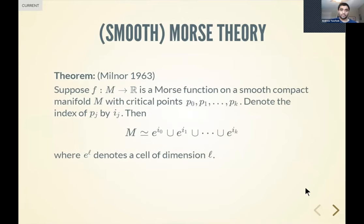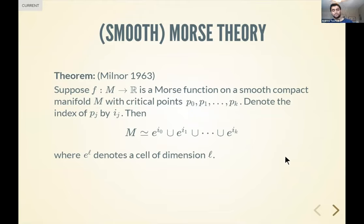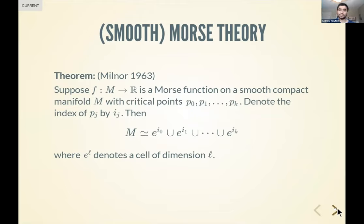One nice statement from smooth Morse theory that we'll see an analog of in discrete Morse theory is that having a Morse function on a manifold gives you the ability to get a cell decomposition of that manifold quite easily. Keep this in mind because it's going to pop up in a different form in discrete Morse theory — this is precisely why discrete Morse theory came to be, since we wanted similar results for messier structures like CW complexes.